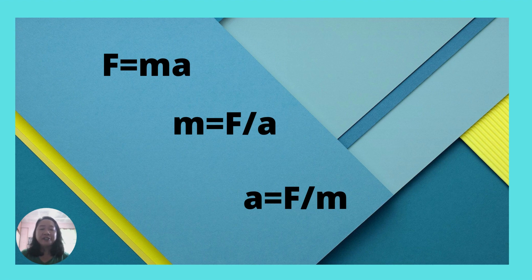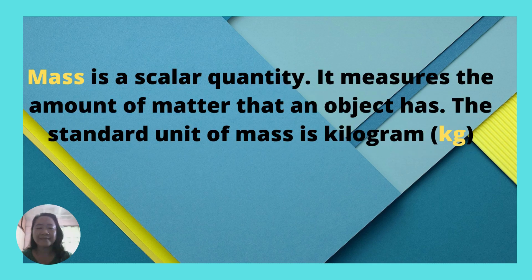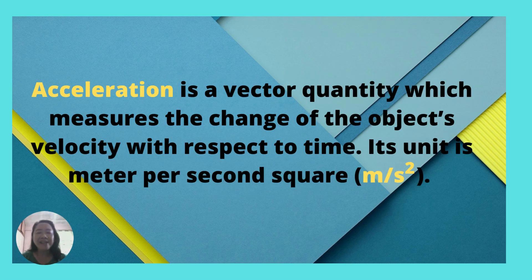Take note that there are three important terms here that you should be familiarized with: force, mass, and acceleration. Force is a vector quantity — it involves the interaction of objects, whether they are pushed or pulled. Its SI unit is Newton, represented by capital N. Mass is a scalar quantity; it measures the amount of matter that an object has. The standard unit of mass is kilogram, symbol kg. Acceleration is a vector quantity, which measures the change of the object's velocity with respect to time. Its unit is meter per second squared.